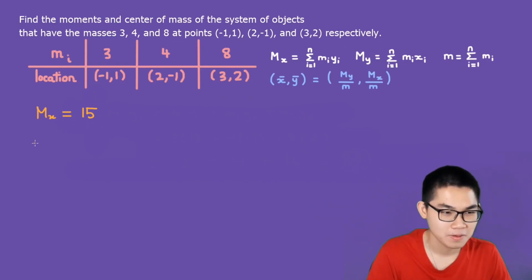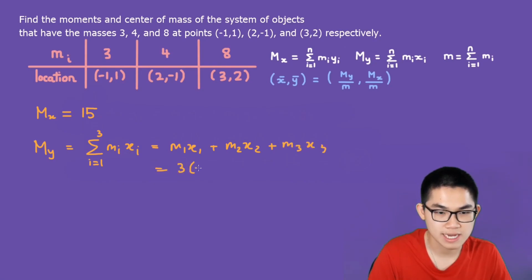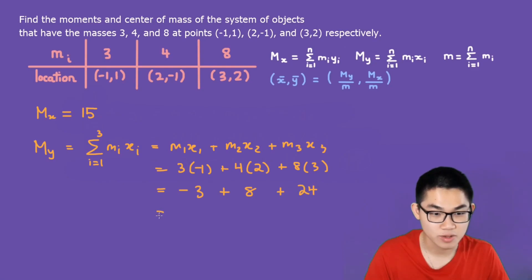How about m_y? Well, m_y is the sum from i equals 1 to 3 of m_i x_i. And that's going to be m1 x1 plus m2 x2 plus m3 x3. So m1 is 3, x1 is negative 1, plus m2 is 4, x2 is 2, m3 is 8, and x3 is 3. That's going to be negative 3 plus 8 plus 24. And this will give you 29.